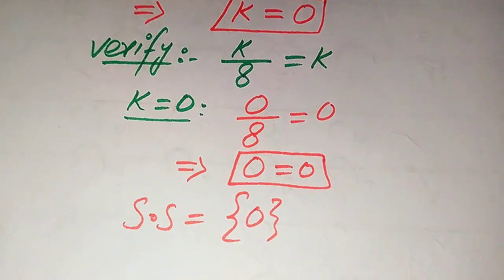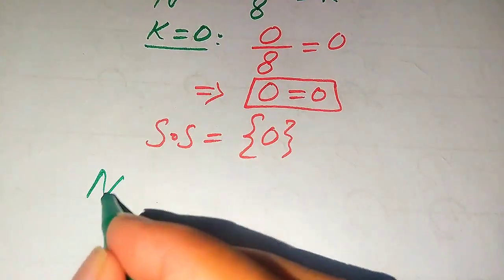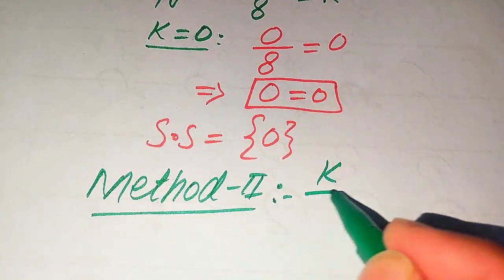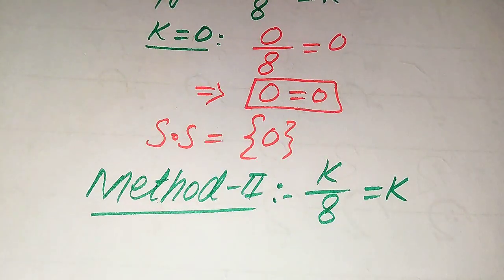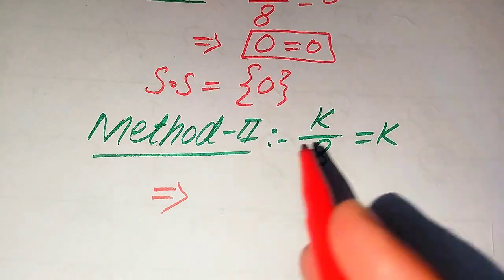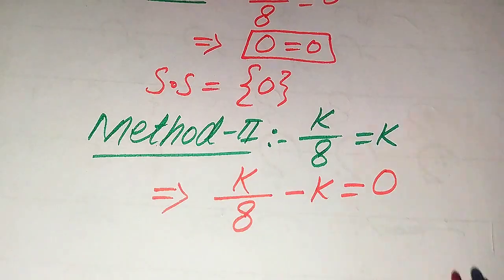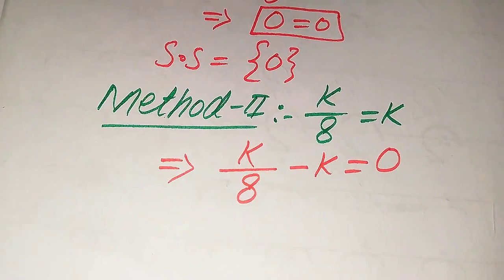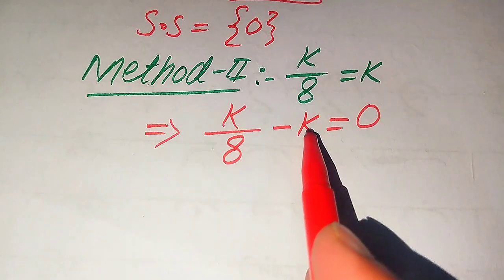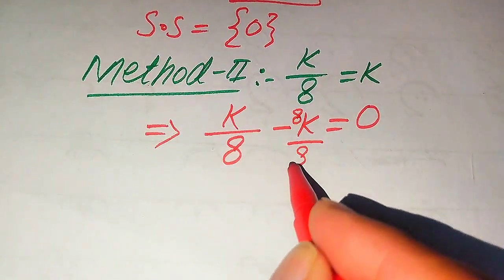In the first method, our solution set is {0}. Now we solve this problem using the second method. We copy down the given equation: k divided by 8 equals k. In this method, we move k to the left hand side. This positive k becomes negative k on the left hand side, so it is written as k divided by 8 minus k equals 0. Now our first term has denominator 8, so we need to make the denominator of this term also 8. In order to do that, we multiply and divide this term by 8.